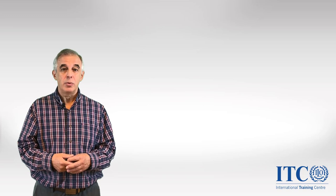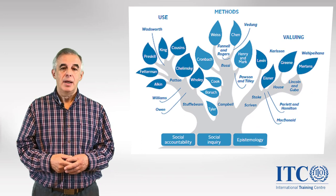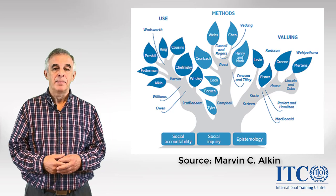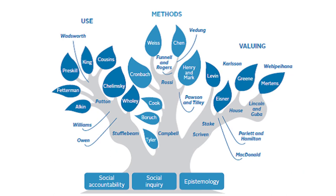Let's start with this interesting picture which was developed by Marvin Alkin recently. It's called the evaluation theory tree. When you look at this tree, you can see that there are three major branches in evaluation theory, and one of those branches is use — use of evaluation.